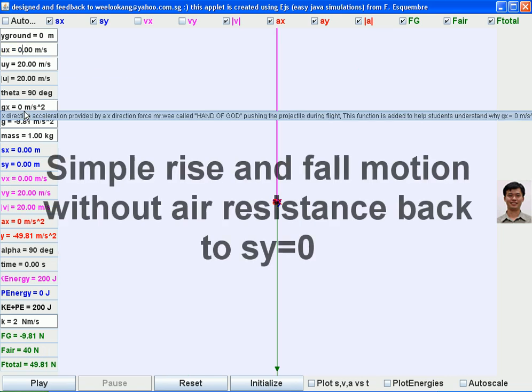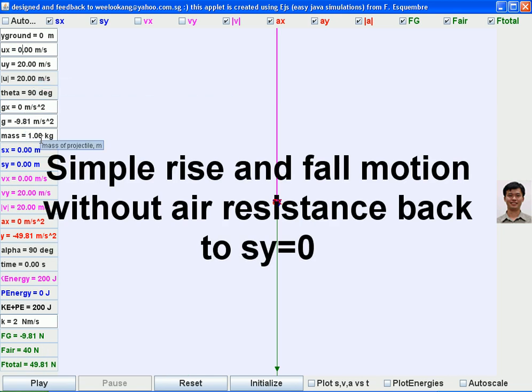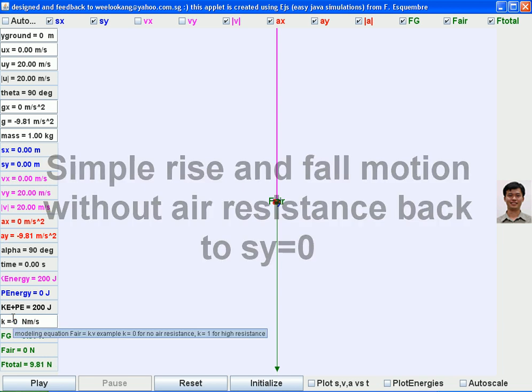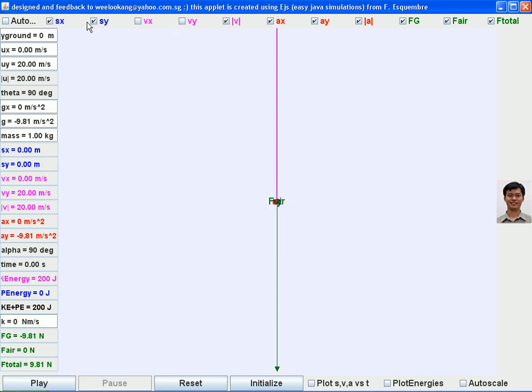you can change the initial y speed to zero. Make k equal to zero so you can unselect some variables to avoid making the simulation too cluttered.